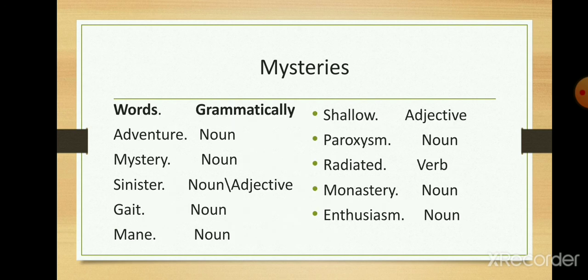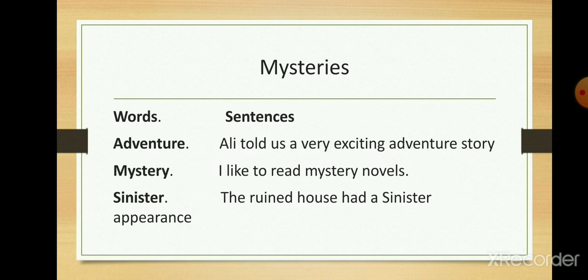Next, the words grammatically. Adventure is a noun. Mystery is a noun. Sinister is an adjective or noun. Gate is a noun. Mane is a noun. Shallow is an adjective. Paroxysm is a noun. Radiated is a verb. Monastery is a noun. Enthusiasm is a noun.